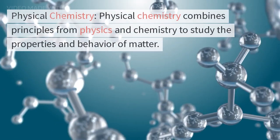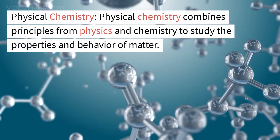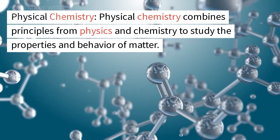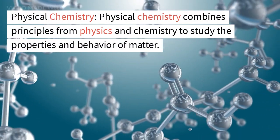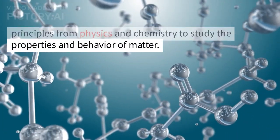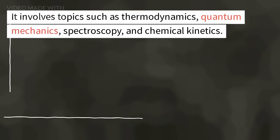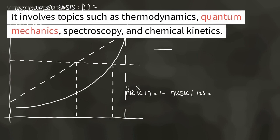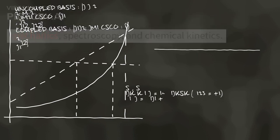Physical chemistry. Physical chemistry combines principles from physics and chemistry to study the properties and behavior of matter. It involves topics such as thermodynamics, quantum mechanics, spectroscopy, and chemical kinetics.